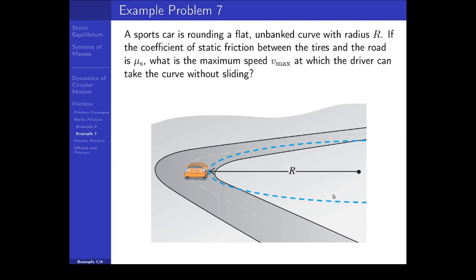Let's look at another example. A sports car is rounding a flat, unbanked curve with radius r. If the coefficient of static friction between the tires and the road is mu sub s, what is the maximum speed v max at which the driver can take the curve without sliding? We are combining friction and circular dynamics. Drawing a free body diagram: the car has weight, a normal force opposing it, and a friction force pointing inward because the car is accelerating inward. If friction were not pointing inward, the car would slide along a straight path and move outward relative to the circular path.